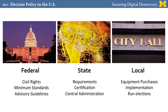Most of the actual work of running elections happens at the local level, in individual counties or cities usually. In most states, local municipalities are responsible for purchasing decisions. They can select from any kind of equipment that's been approved by their state. They're also in charge of implementing the election rules and procedures and for actually running the election. A lot of the work ends up getting done by volunteers who take part in administering the system on election day.